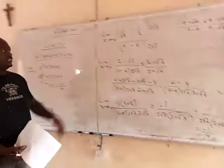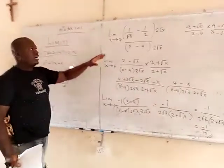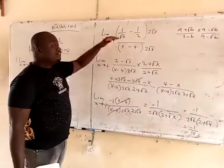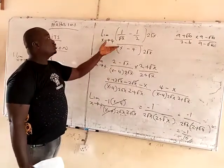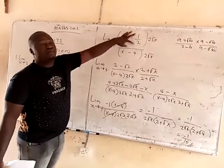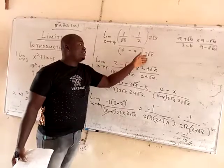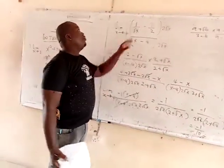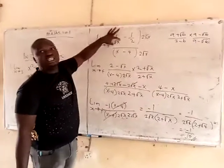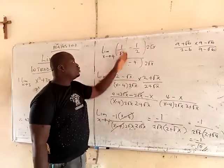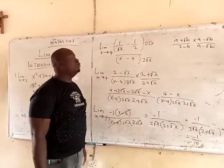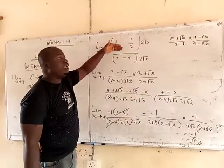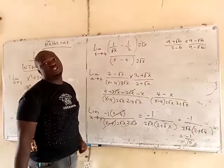So this is the answer to this. Remember, whenever you face a question like this, the very first thing you need to do is find the LCM — multiply the top and bottom. That's the LCM. The next rule: whenever there is a square root in the complex number, use the conjugate to multiply both sides. So the very first thing I did was to get the LCM — I wanted to turn the improper fraction to a proper fraction.